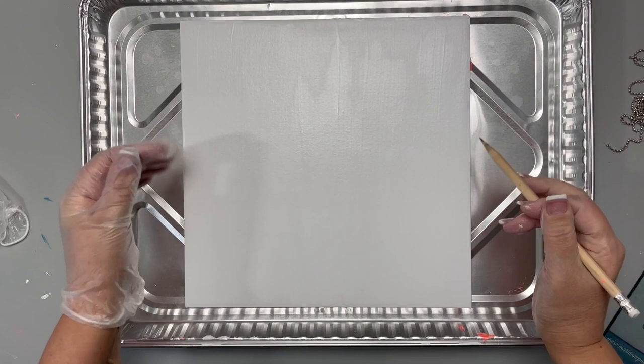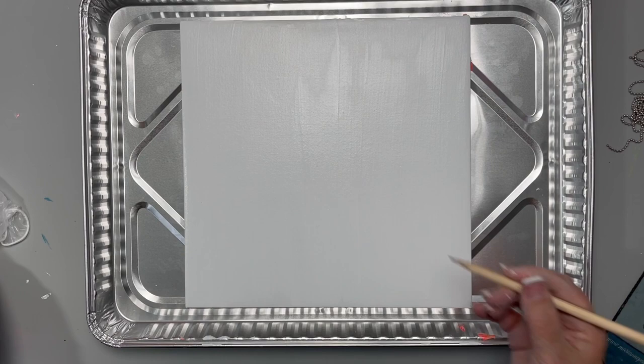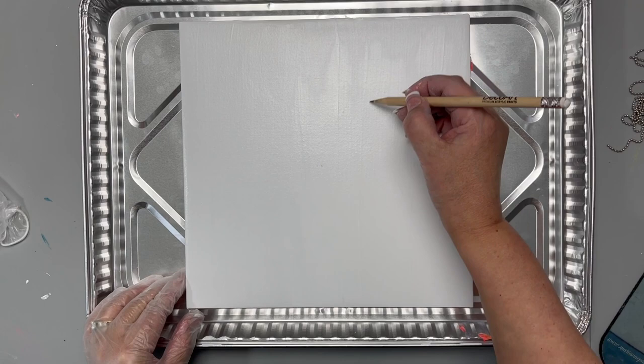You can use a pencil and draw out a basic shape of the flower if you want to, or you can just start pouring straight from the bottle. I'm going to show you how I'm going to lay this out with a pencil by finding the center of my canvas and I'll draw five of them.